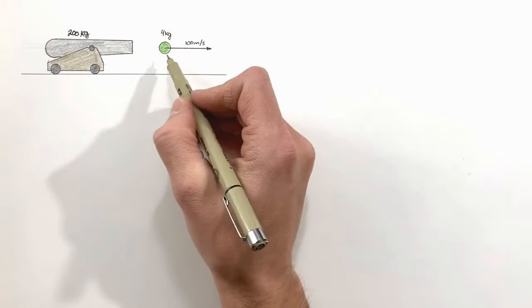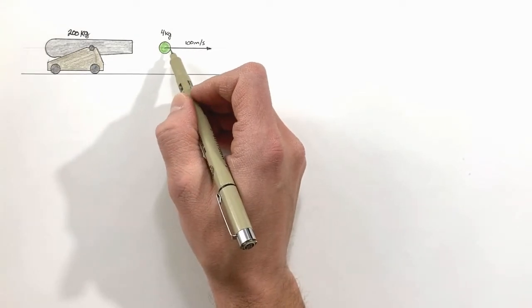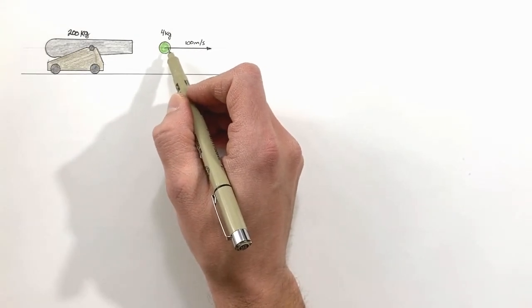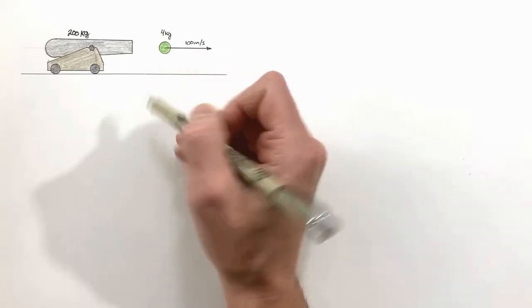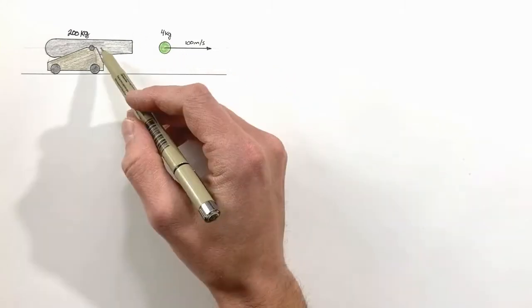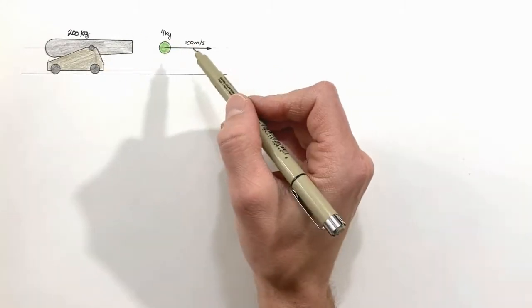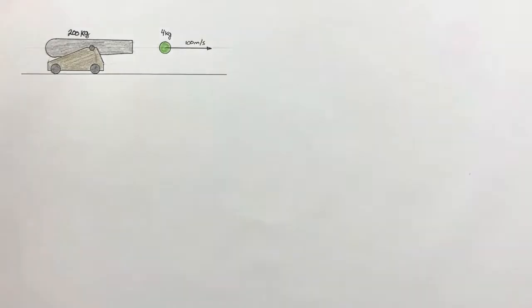To get from here to thrust, what I want to do is take a look at a slightly different situation — a cannon that fires two smaller cannonballs consecutively.